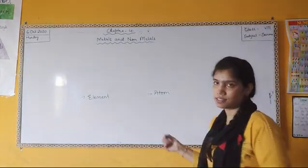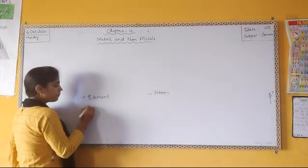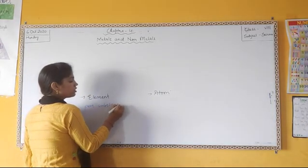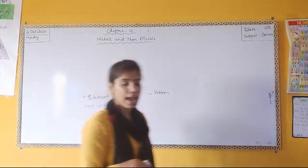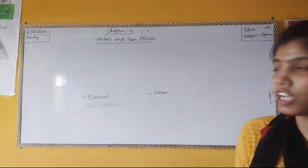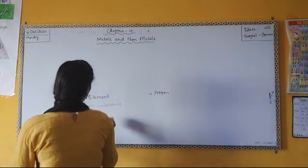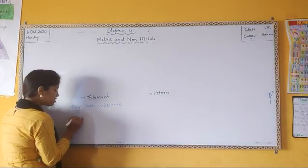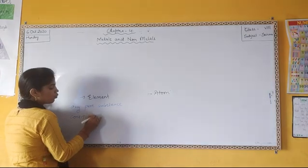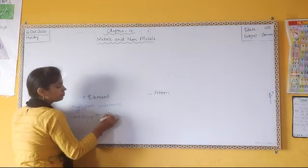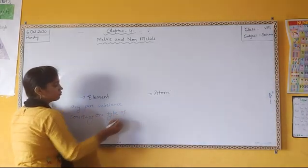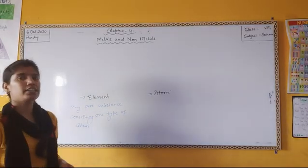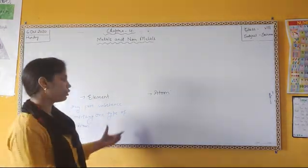Any substance, any pure substance, any pure substance in which one type of atoms are present - which consists of any pure substance consisting of one type of atom, in which all atoms of the same type are present - we call elements.